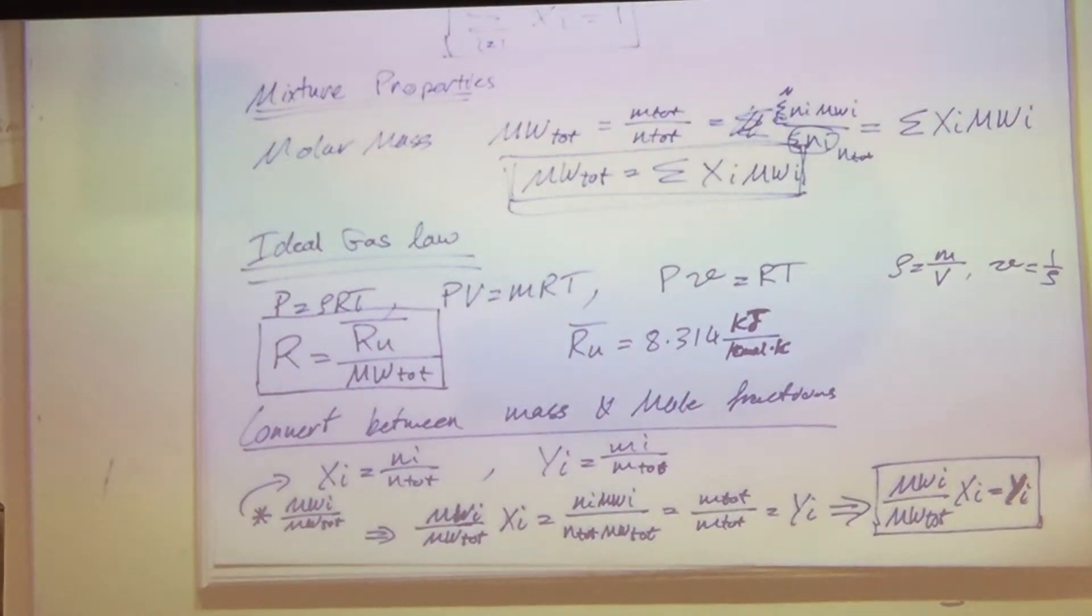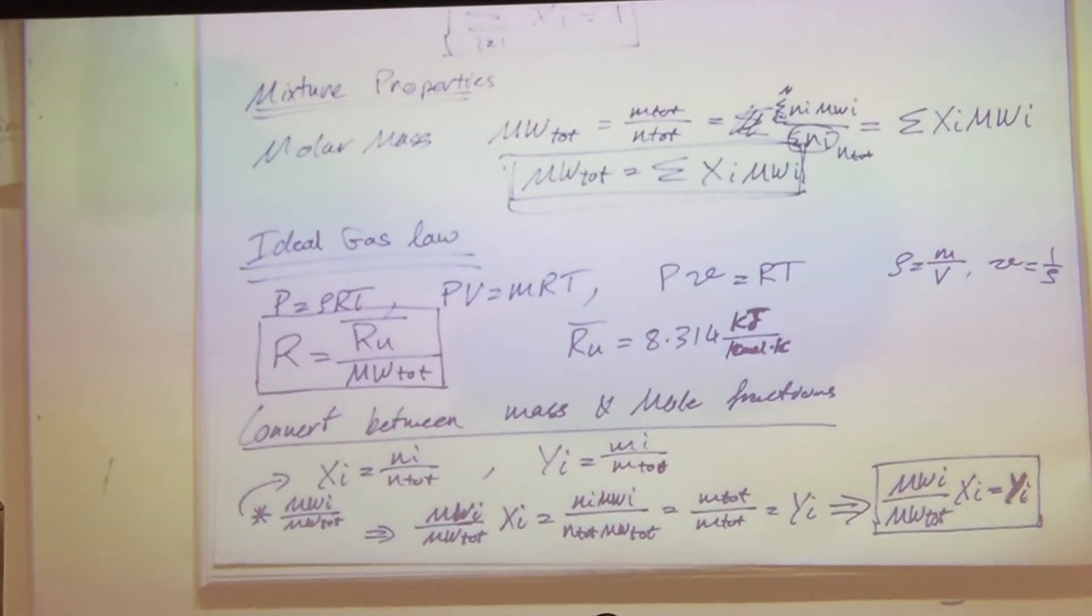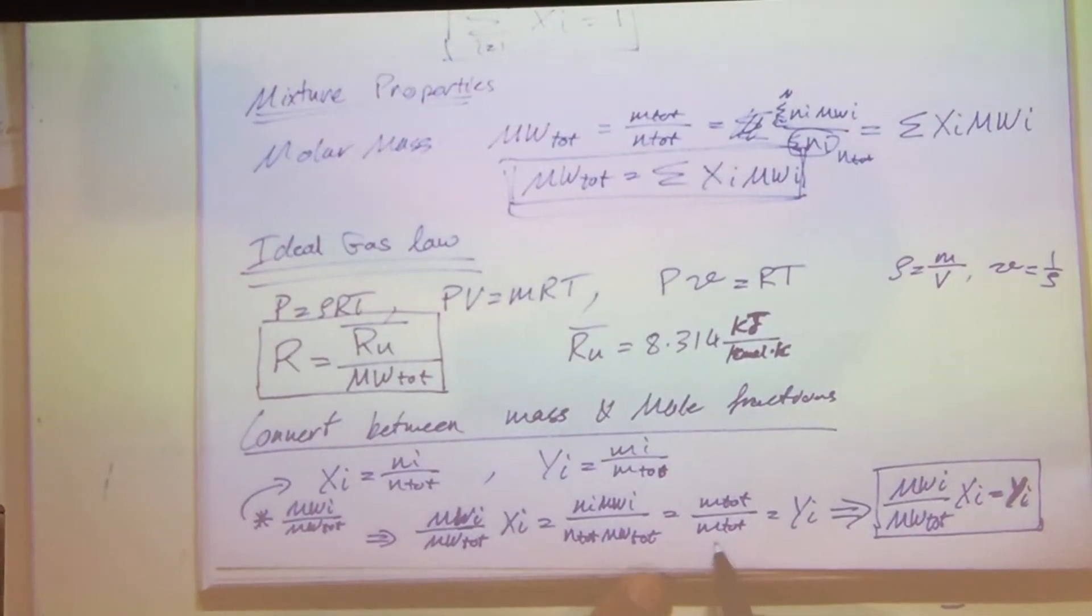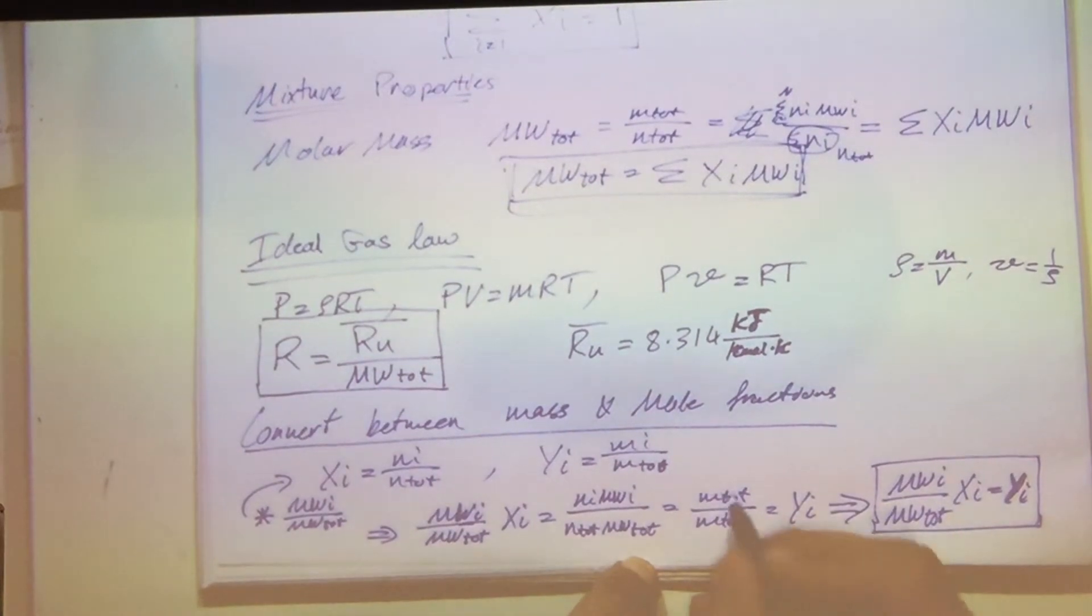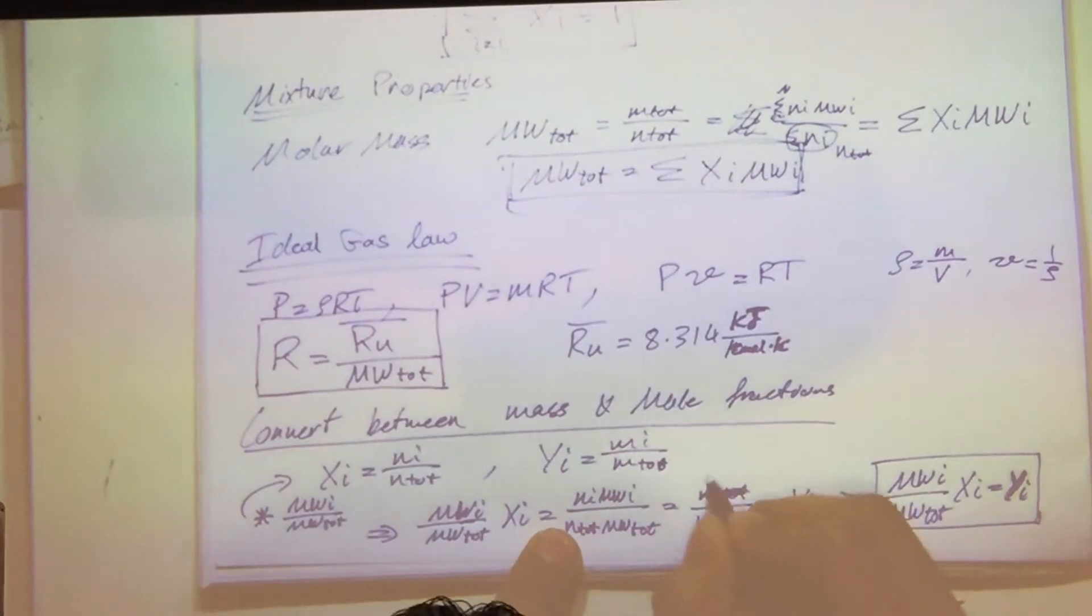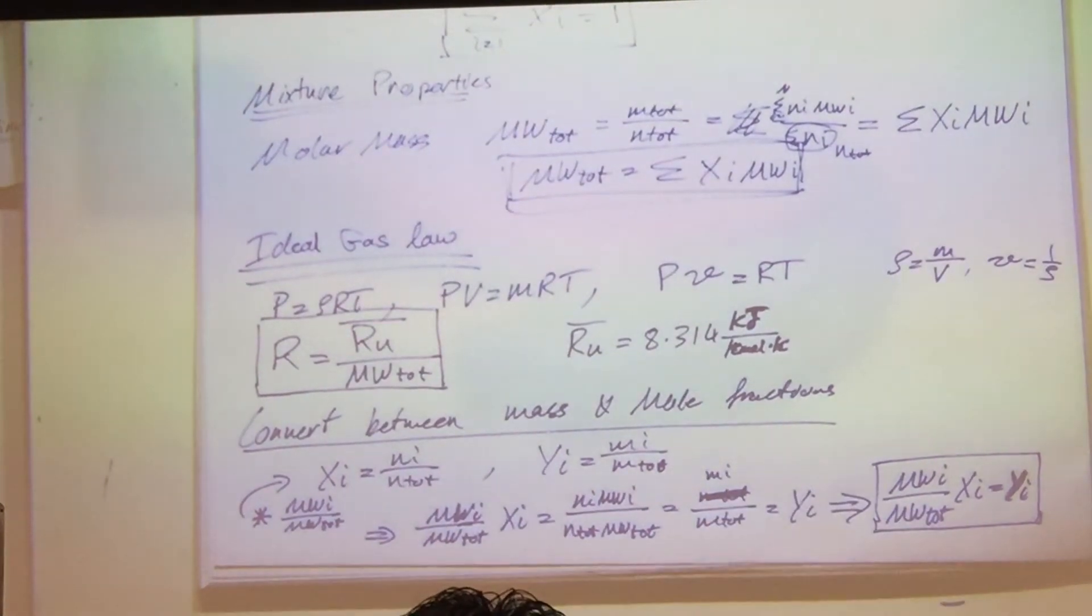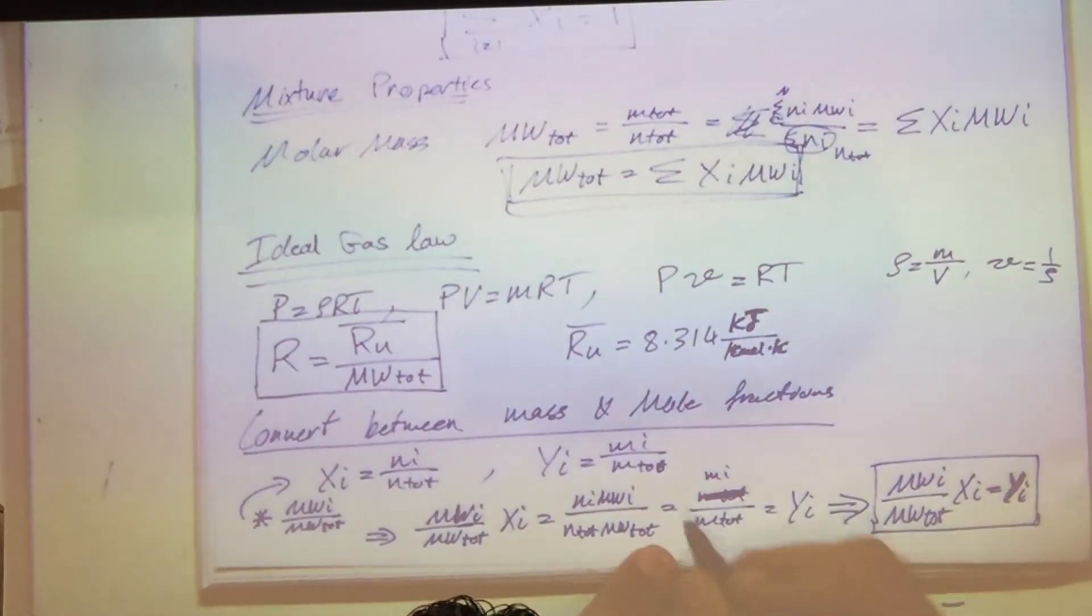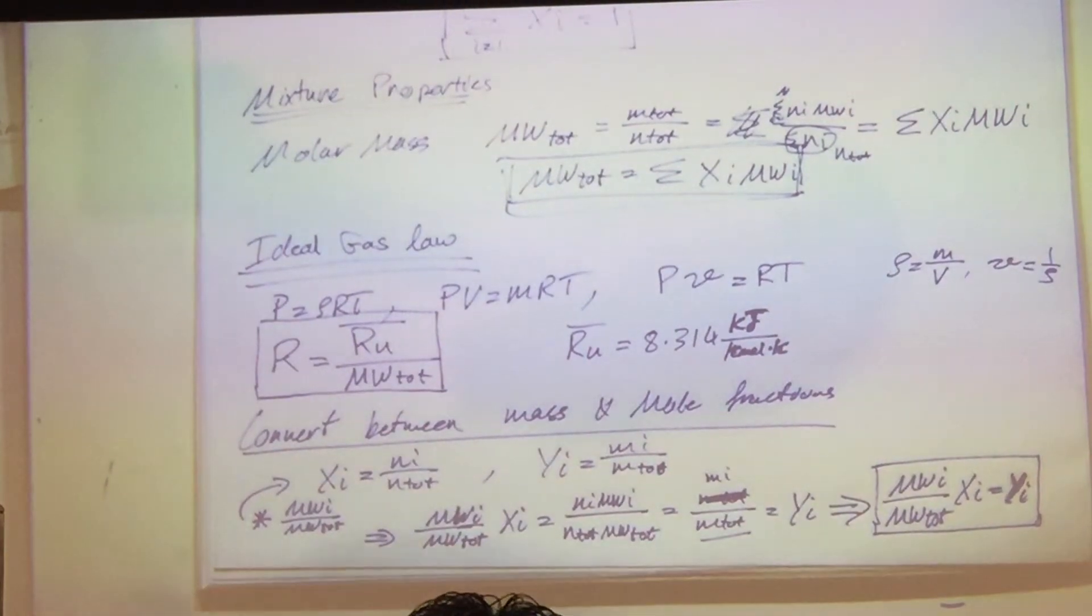Question. You're going to hold up Yi on the bottom line. Yi, M total divided by MI, sorry, yeah, this is the, oh, it's not the sum, sorry, yep, Mi over M total. I think I, yeah, I looked at this and I just put Mi over M total, thank you for catching that.